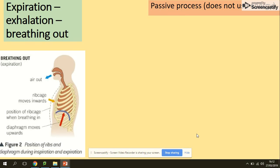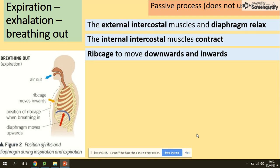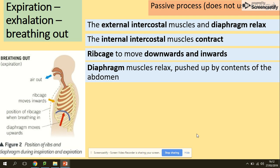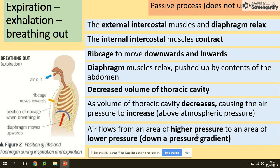Breathing out is a passive process — we don't require energy for this. The external intercostal muscles and diaphragm relax, while the internal intercostal muscles contract. The ribcage moves downwards and inwards — the opposite of inspiration. The diaphragm is pushed up by the contents of the abdomen. This causes a decrease in volume, which causes an increase in pressure, and air flows down the pressure gradient. Pulmonary pressure is now higher than atmospheric pressure, so air is forced out of the lungs.